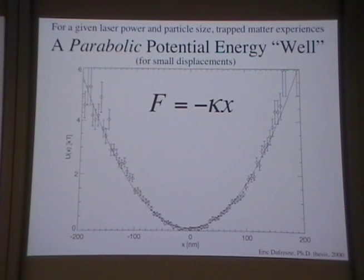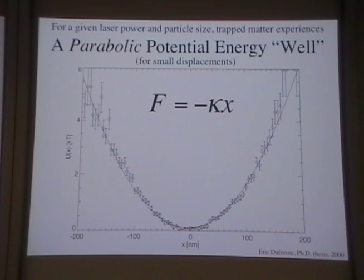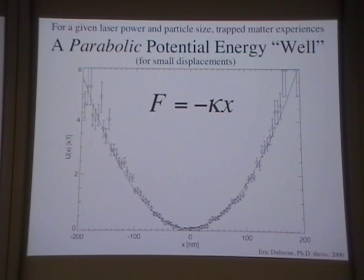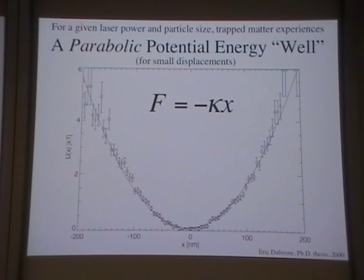Parabolas are wonderful things in physics — physicists smile when they see parabolas. If the potential is parabolic and the force is the gradient of the potential, you can see the force is proportional to displacement. That's for a relatively small displacement, which is fine because that's what we're interested in for single-molecule work. So we have a parabolic potential that allows us to measure displacements such that it behaves as a Hookean spring. If I can calibrate kappa, the spring constant, then for any displacement I can work out what force is exerted.